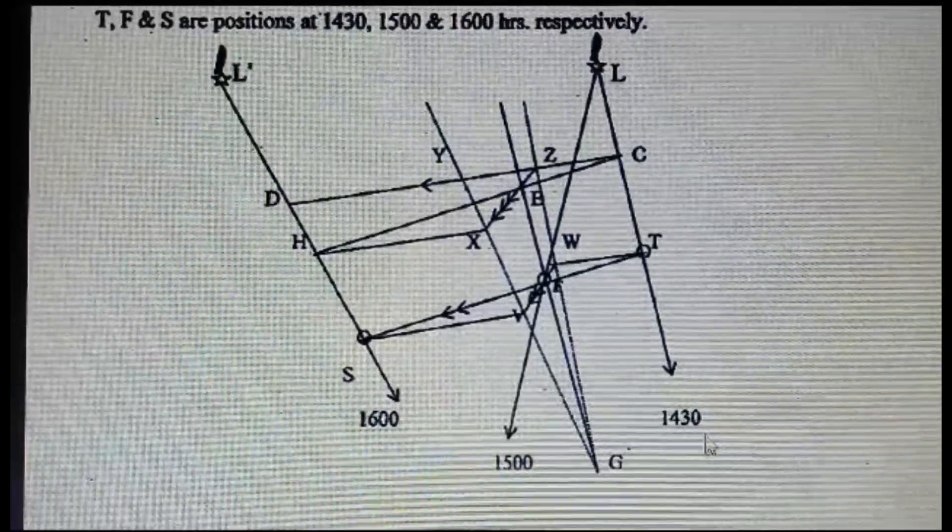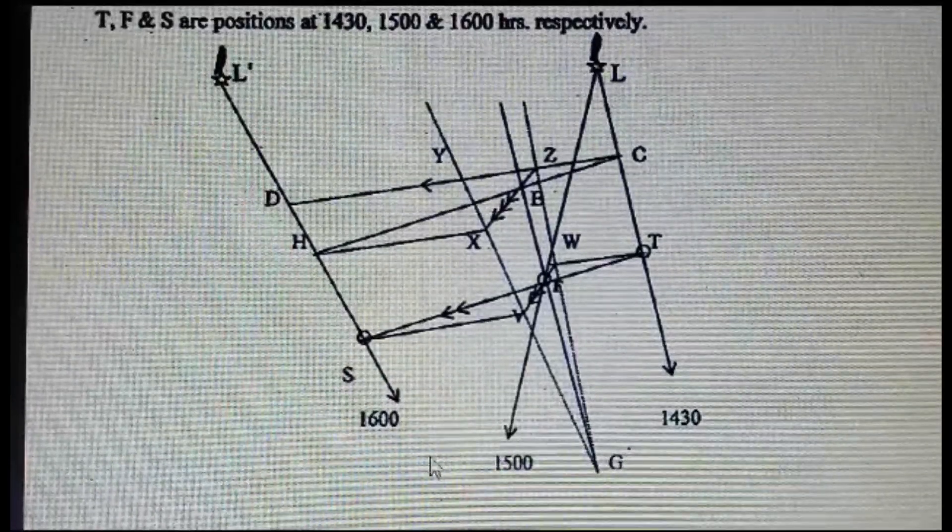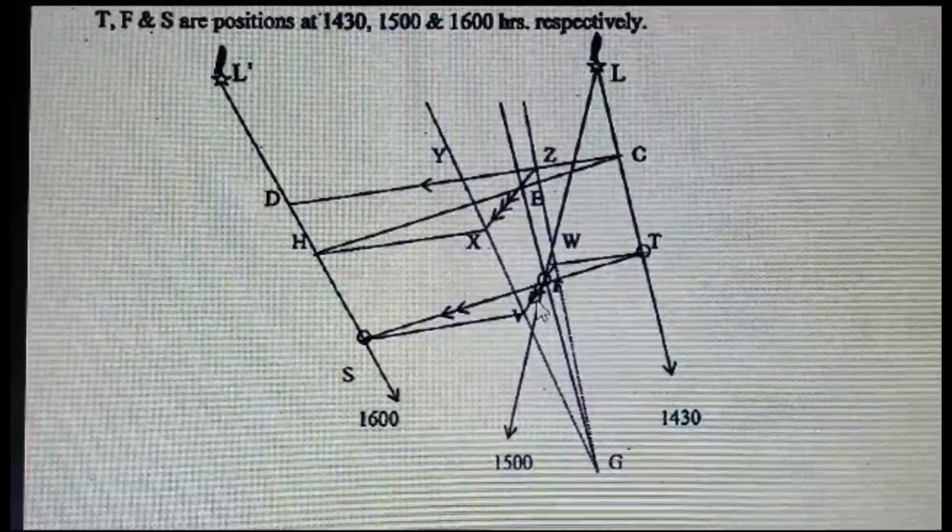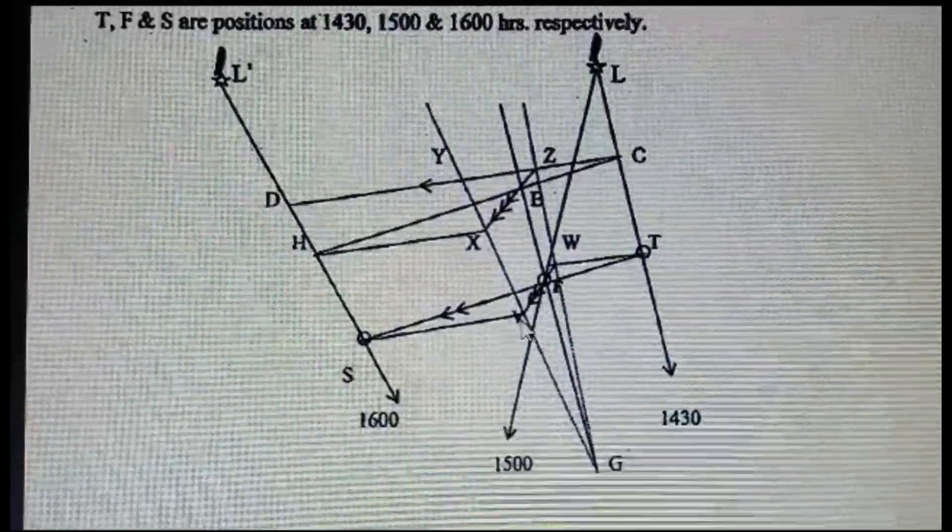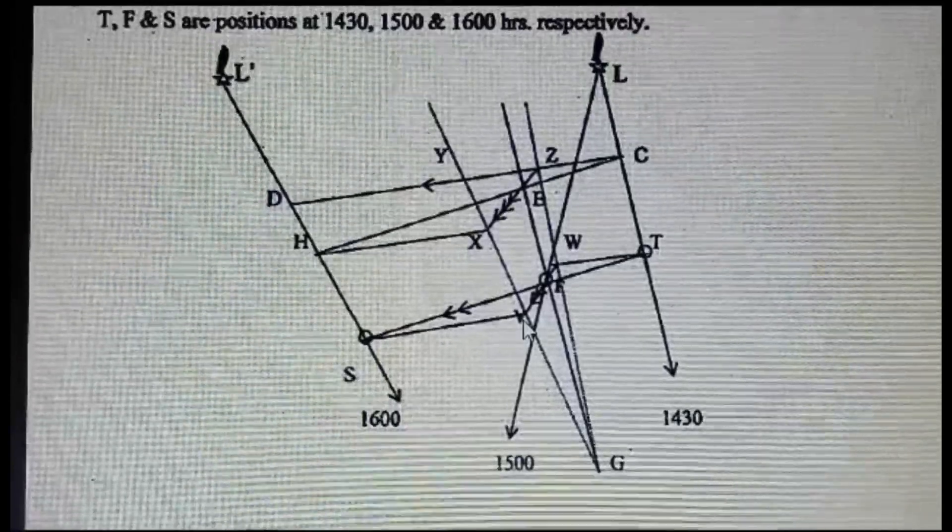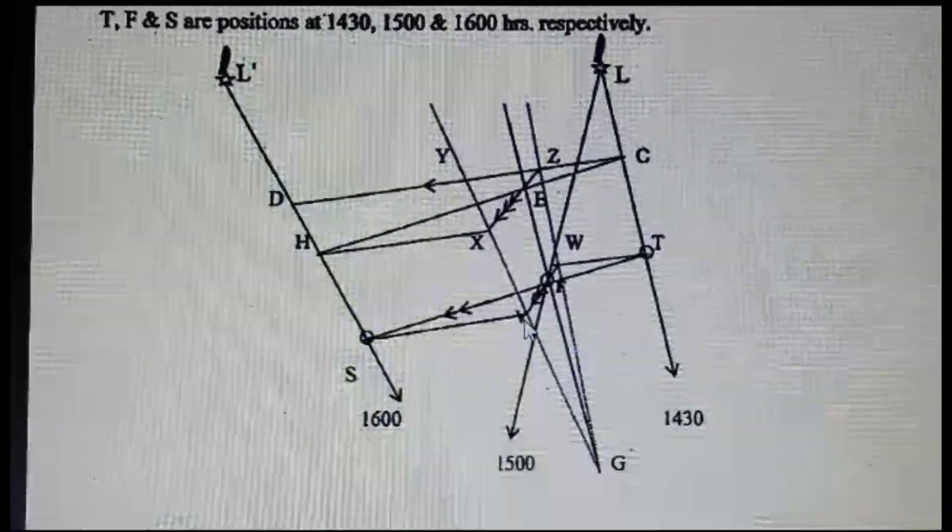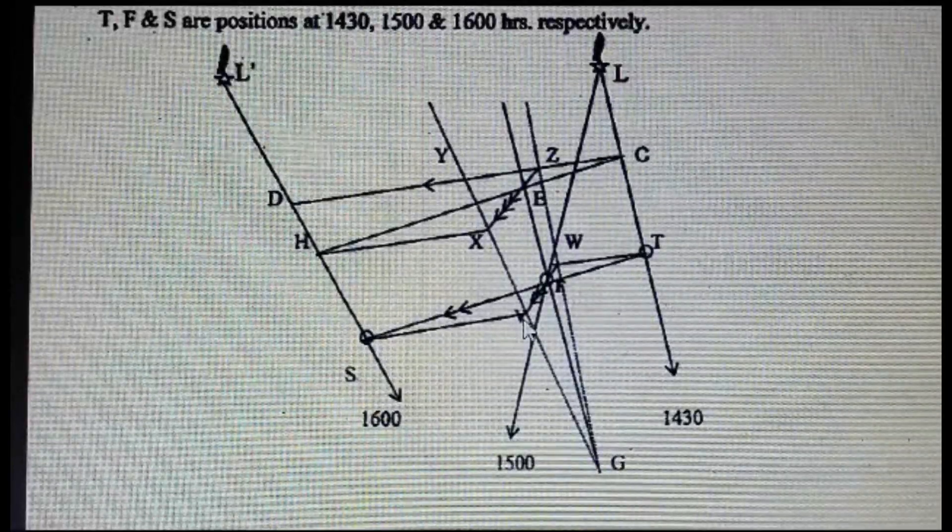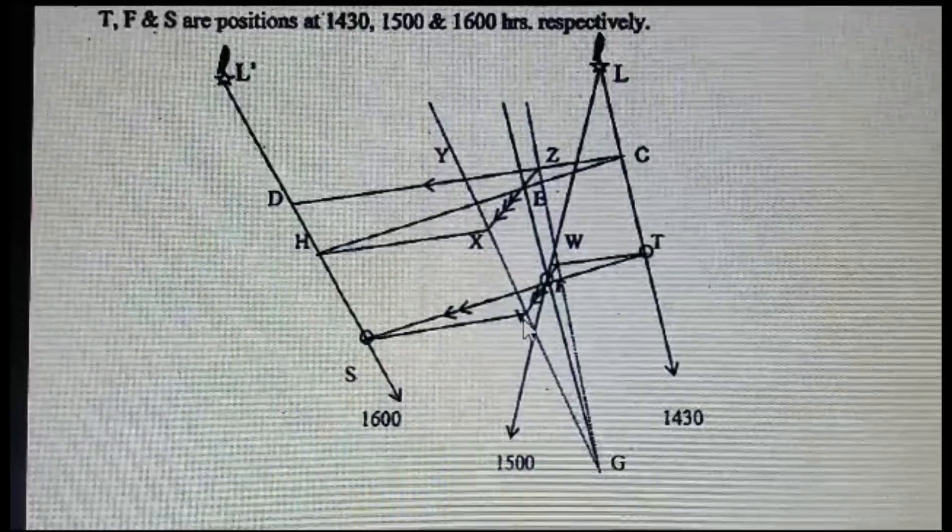Measure it. So in this question it is from 1430 to 1600, that is one and a half hours. Convert it to one hour, the distance, and you will get your rate of current. So this is the basic understanding of your FIST triangle.